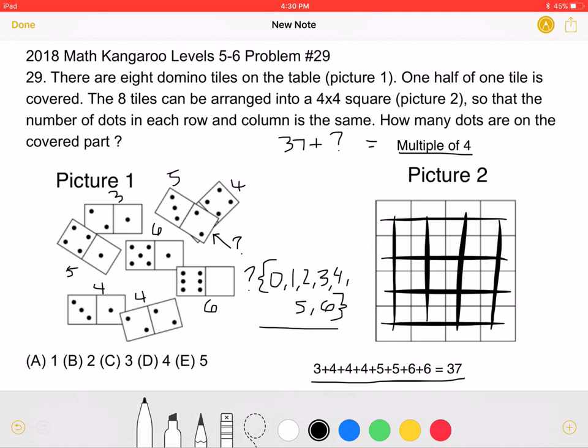Looking at the possible values of the question mark, as seen here, and knowing that it must add up to a multiple of 4, we can see that 40 is the correct answer. 37 plus 3 is equal to 40.